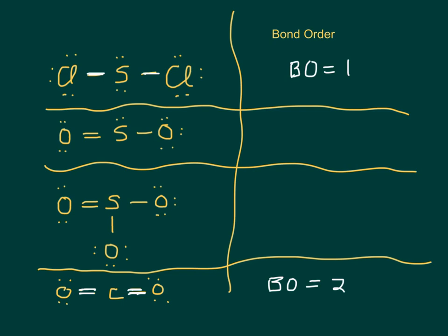Now, when there's resonance structures, it's a little more complicated. For SO2, it's a double bond on the left and a single bond on the right. Well, what's the average of one and two? One and a half. So its bond order is one and a half.